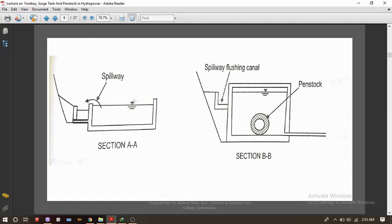This is section A-A. This main basin is the forebay and this is the spillway canal. You can see over here in the section. And this is the penstock pressure shaft where forebay gives the complete submergence without the entrainment of air.